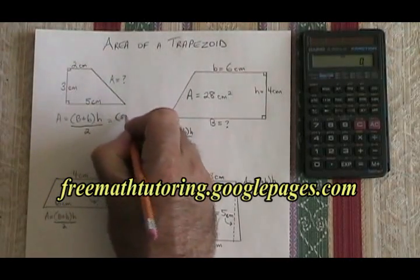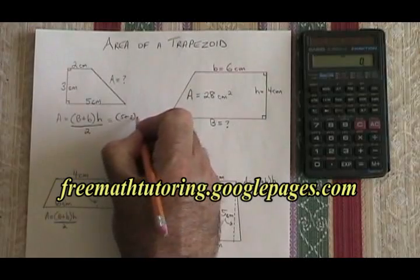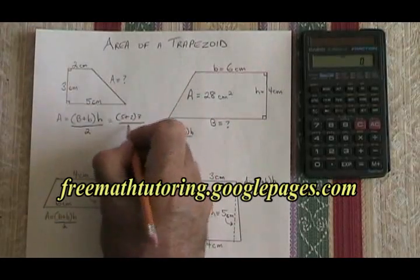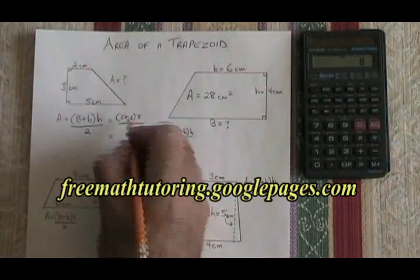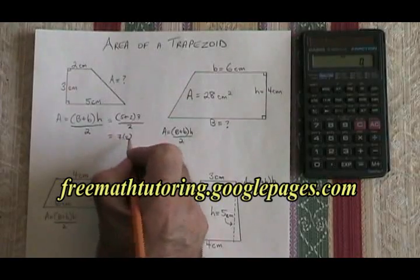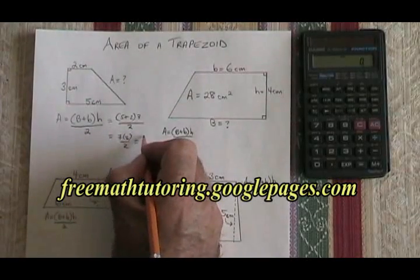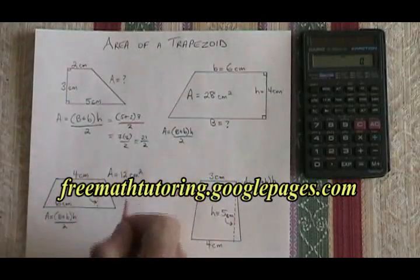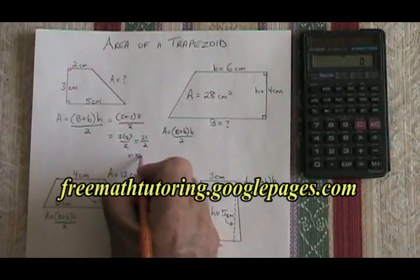Big B is 5, plus little b, which is 2, times H, which is 3, all over 2. 5 plus 2 is 7, times 3 over 2. 7 times 3 is 21, and 21 over 2 is 10.5.